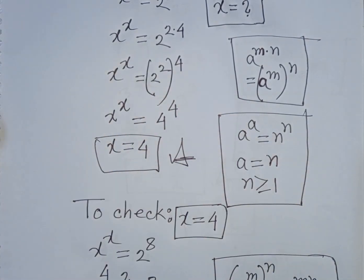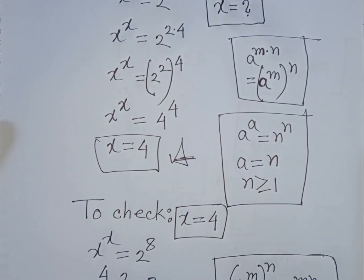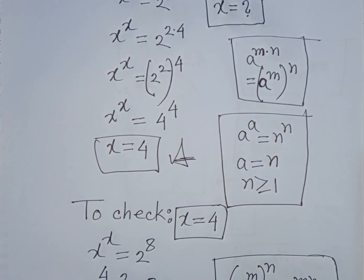So our correct and final answer will be x is equal to 4 — this is justified. I make videos with great difficulty, so please like, comment, and subscribe to the channel. Thank you.